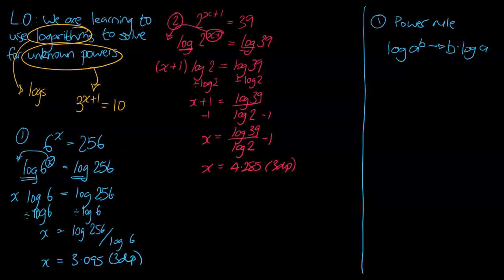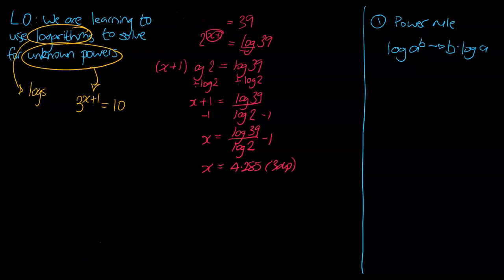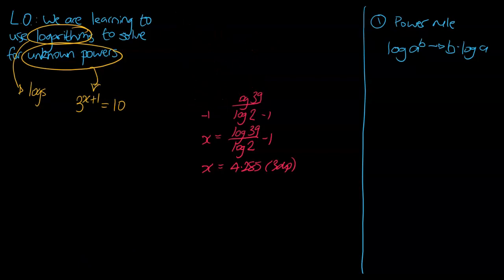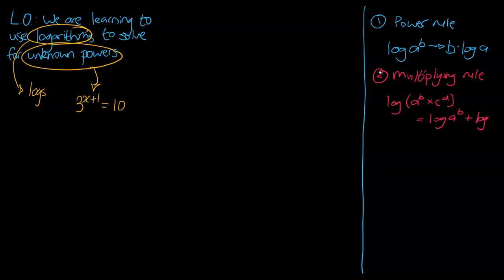We're now going to look at two other rules related to unknown powers which are being multiplied and also unknown powers which are being divided. For that, we need two more log rules. Log rule number 2 is the multiplying rule: if you have log of (a^b × c^d), you can change that to log(a^b) plus log(c^d) — basically splitting that into two separate logs.